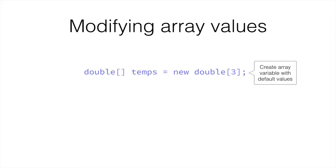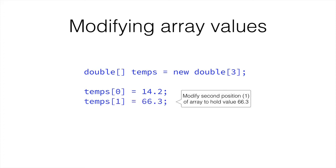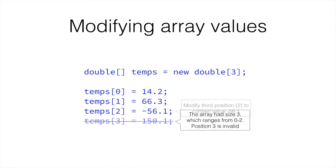So how can we modify array values? The first thing we're going to do is create the array variable with the default values, and here we have three 0.0 values in our temps array, and then we're going to change the first element of this array. The first position on an array is position 0. We start counting from 0 in computing. So here, the 0th element, or the first element of the array, we're going to change its value from 0.0 to 14.2. And then we're going to change the second position, or index 1, to hold the value 66.3. And finally, we're going to change the third position, or index 2, to contain the value minus 56.1. If we try doing the same for position 3, or rather index 3, position 4, it would be invalid and we would get an error, because we've created an array that has three slots, and position 3 would be the fourth slot. And obviously, our array doesn't have that much size.